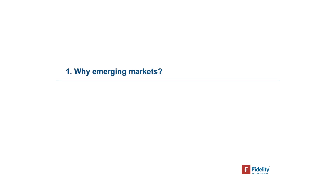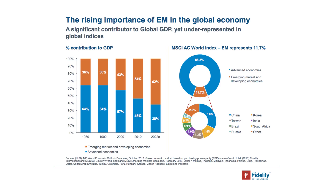Let's turn now to look at global emerging market equities in a little more detail. What do we mean by global emerging markets? The countries that comprise global emerging markets account for currently around 60% of global economic output. Emerging market companies account for 60% of that global GDP. In addition, of incremental economic growth globally, emerging markets account for around 65% to 70%, and thus over time, emerging markets are increasing in terms of their importance to the global economy.